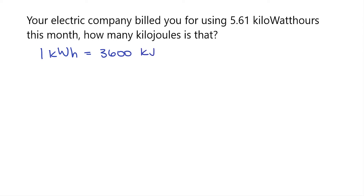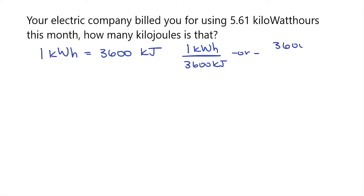Now, let's create fractions to help us solve this problem. We could say that for every 1 kilowatt-hour, I have 3,600 kilojoules. Or, I could say that for every 3,600 kilojoules, I have 1 kilowatt-hour.